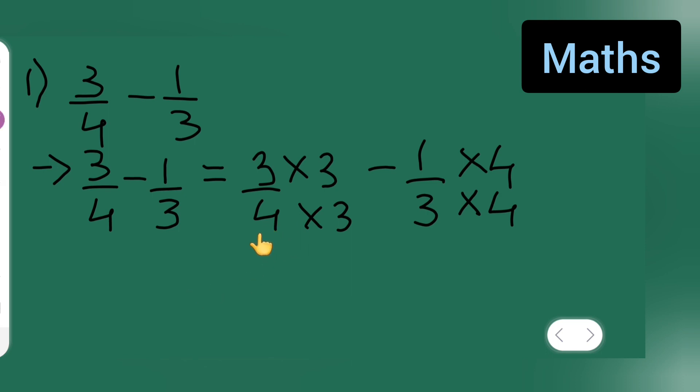So here what you'll have done is you'll have multiplied this with this one and this with this one, right? So now what you'll have to do is write is equal to.